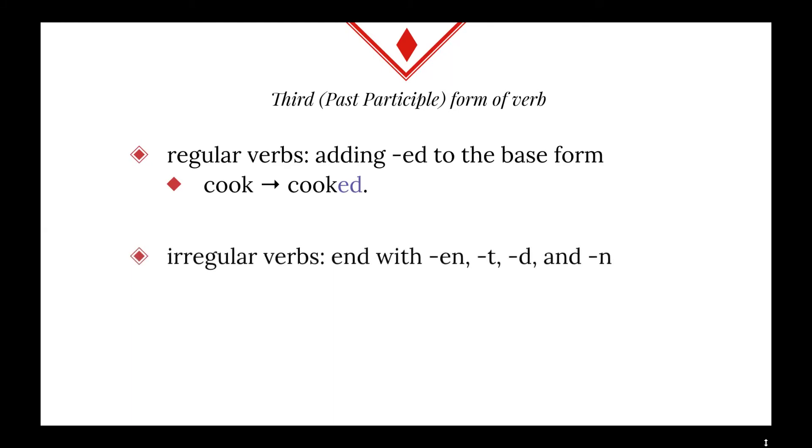The third form of the verb is the past participle form. For regular verbs, this can be made by adding ed to the base form. So for example, cook becomes cooked. With irregular verbs, they end with en, t, d, or n. So swell becomes swollen, burn becomes burnt, hope becomes hooked, and break becomes broken.